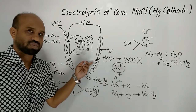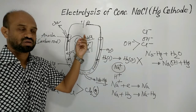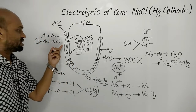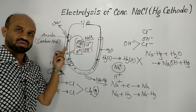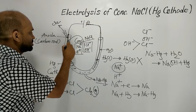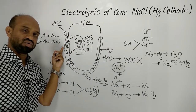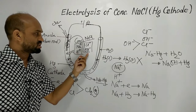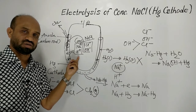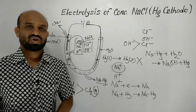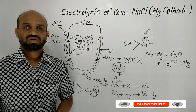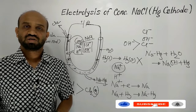As mercury is connected to the negative end of the cell, it is negatively charged. The anode will attract negatively charged ions, and the cathode will attract positively charged ions. This is all about the electrolysis of concentrated solution of sodium chloride when mercury is used as cathode.